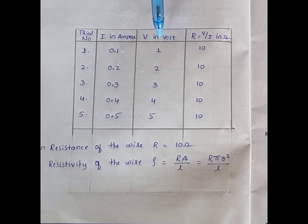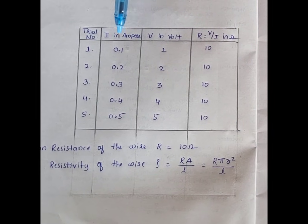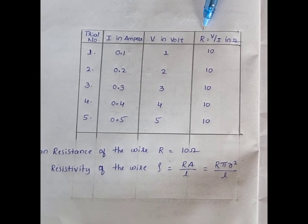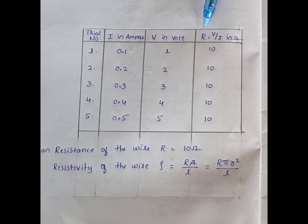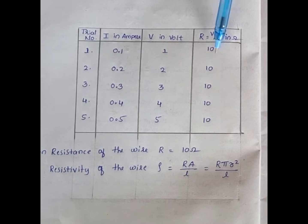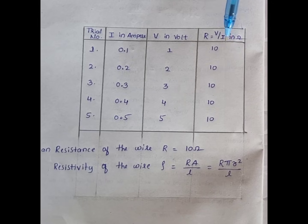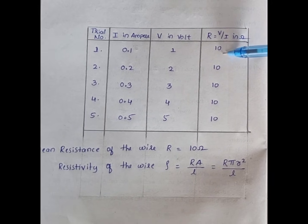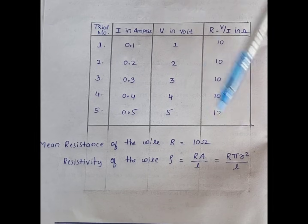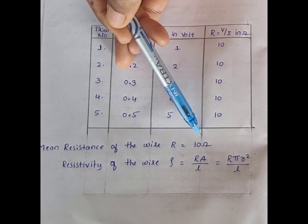We have taken readings for 1 volt – 0.1 ampere, 2 volt – 0.2 ampere, and so on. We have to take 5 trials. At last we calculate the resistance of the wire using the formula R equal to V by I. 1 divided by 0.1 is 10; 2 divided by 0.2, 3 divided by 0.3, and so on. The resistance of the wire is 10 ohm. The mean resistance R equal to 10 ohm.